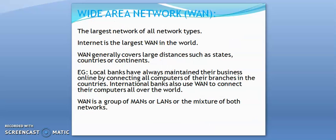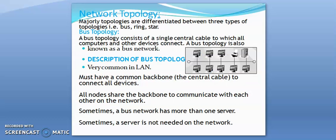Wide Area Network, or WAN, is the largest of all network types. The internet is the largest WAN in the world. WAN generally covers large distances such as states, countries, or continents. For example, local banks maintain business online by connecting all computers of their branches across the country, and international banks also use WAN to connect their computers all over the world.